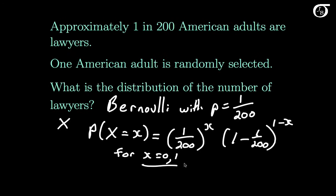And if we substituted these values in here, we'd see that the probability that we do get one lawyer is going to be equal to 1 over 200, and the probability that we don't get a lawyer, or get 0 lawyers, is going to simply be 199 over 200.